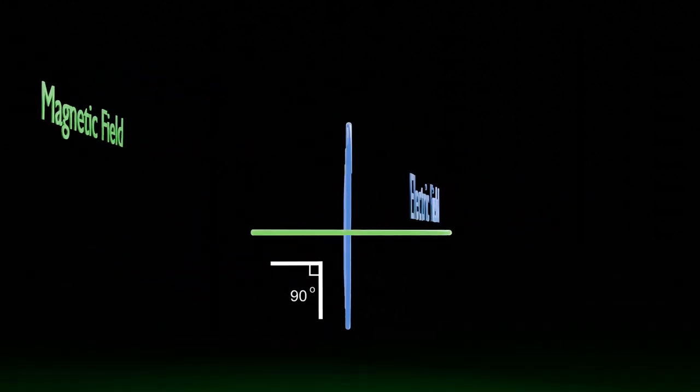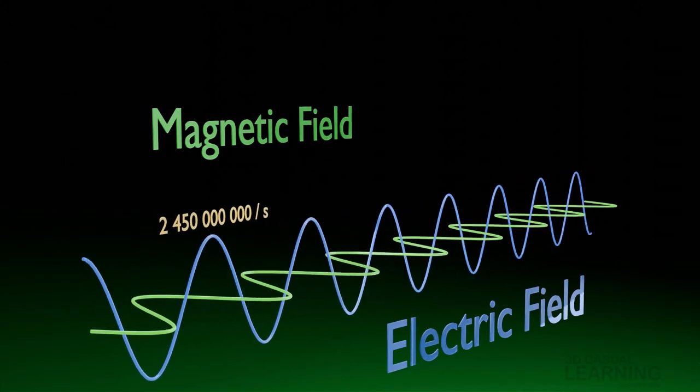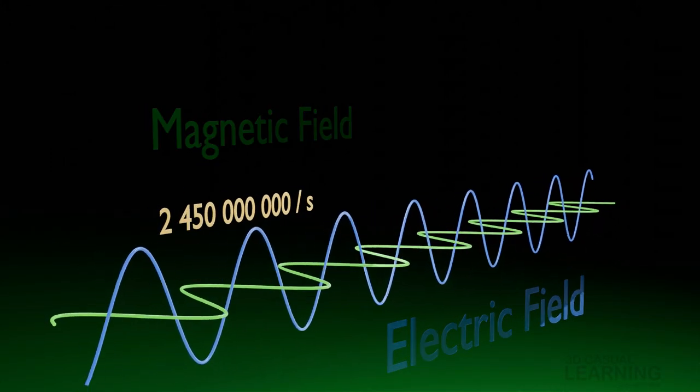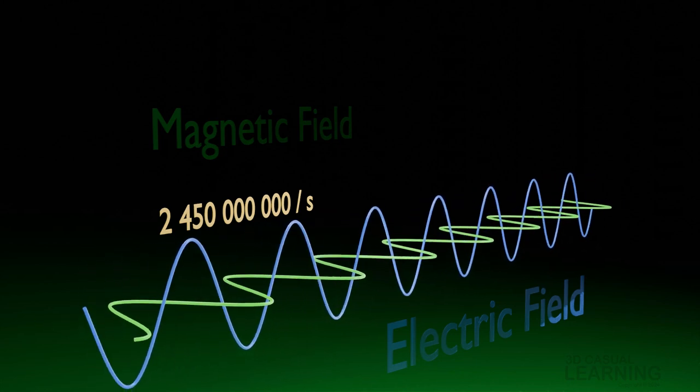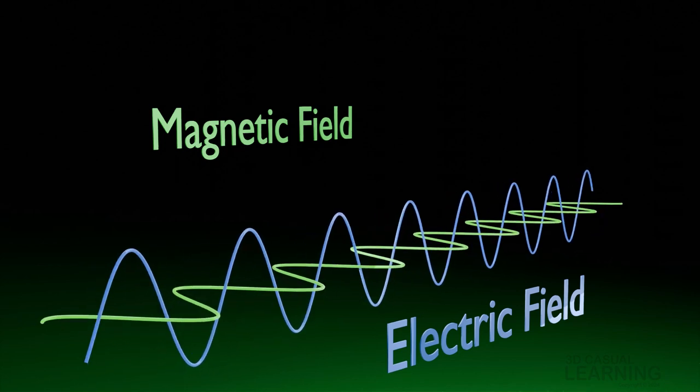These fields are perpendicular to one another and oscillate at 2.45 billion times per second. But in this video, we only focus on the electrical field, since it's used for heating up the food.